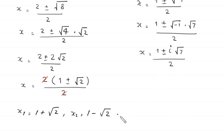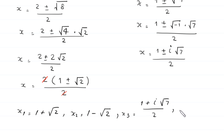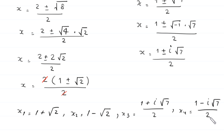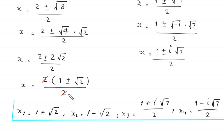From this we get two complex solutions: x₃ = (1 + i√7) / 2 and x₄ = (1 - i√7) / 2. These are all four solutions of the original equation.